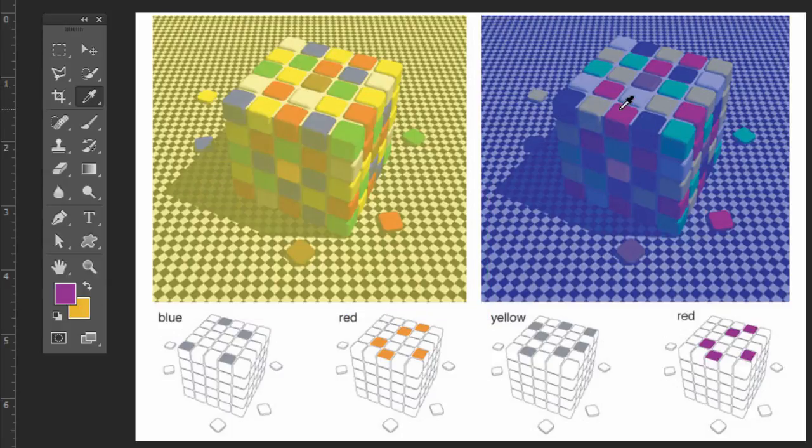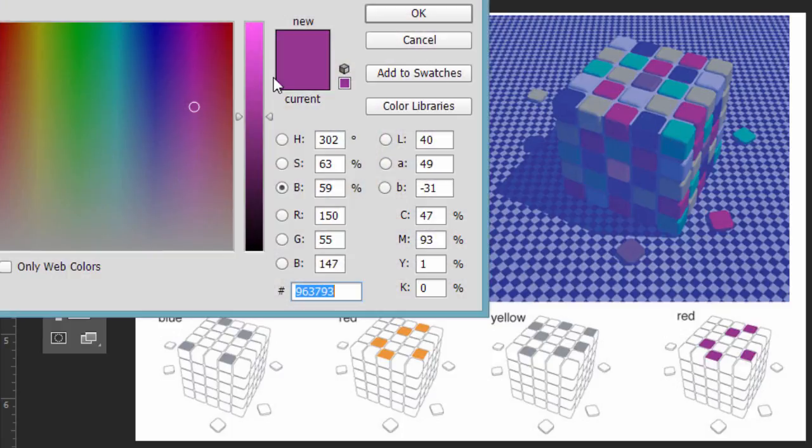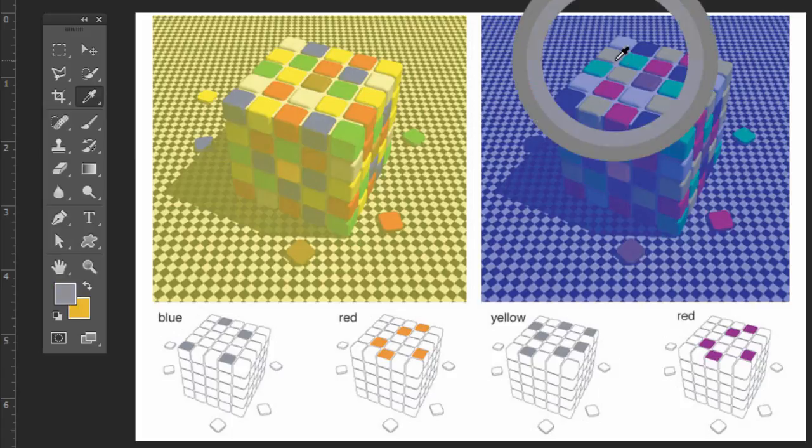If I click over here, it looks red. It's actually purplish. And if I click on these, they look like yellow. It's actually gray.